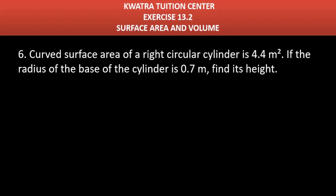Let's start with question number 6. It says curved surface area of a right circular cylinder is 4.4 meter square. So what do you have here? CSA is given here, which is basically 4.4 meter square.